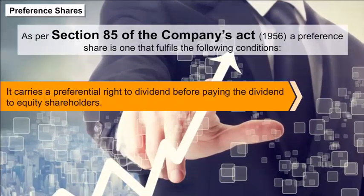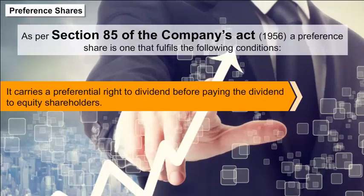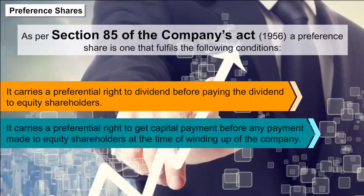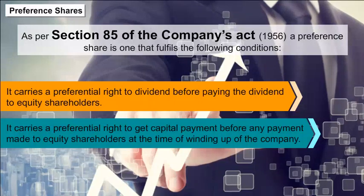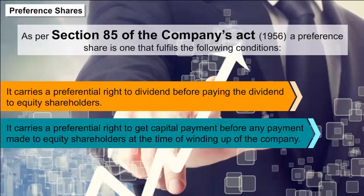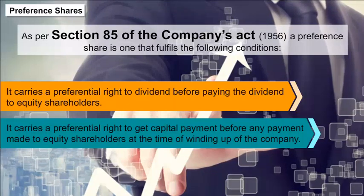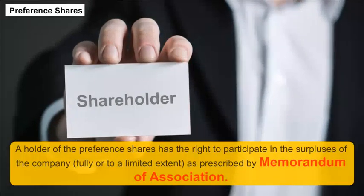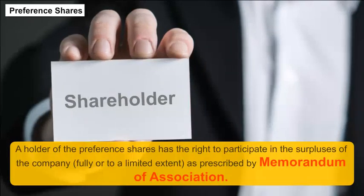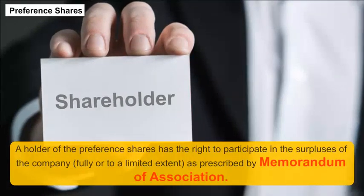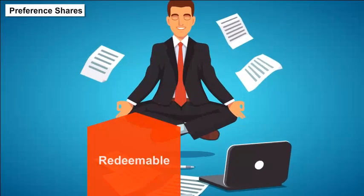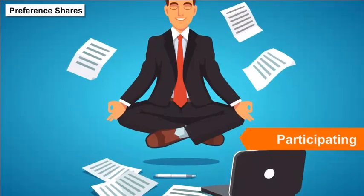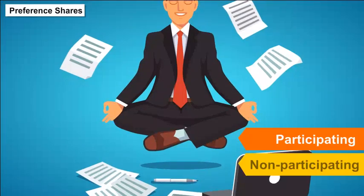Preference shares carry a preferential right to dividend before paying dividend to equity shareholders, and a preferential right to capital payment before any payment made to equity shareholders at the time of winding up. A holder of preference shares has the right to participate in the surpluses of the company, fully or to a limited extent, as prescribed by the memorandum of association. These shares can be redeemable or irredeemable, cumulative or non-cumulative, or participating or non-participating.